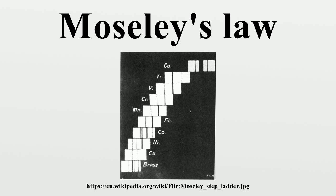Following Bohr's lead, Moseley found that this relationship could be expressed by a simple formula, later called Moseley's law, where the frequency of the main K x-ray emission line depends on constants that vary by line type. Moseley himself chose to show this in the standard Rydberg style, giving three-quarters of the fundamental Rydberg frequency for K-alpha lines, and for L-alpha lines five-thirty-sixths times the Rydberg frequency. Moseley's constant was given as a general empiric constant to fit either K-alpha or L-alpha transition lines.